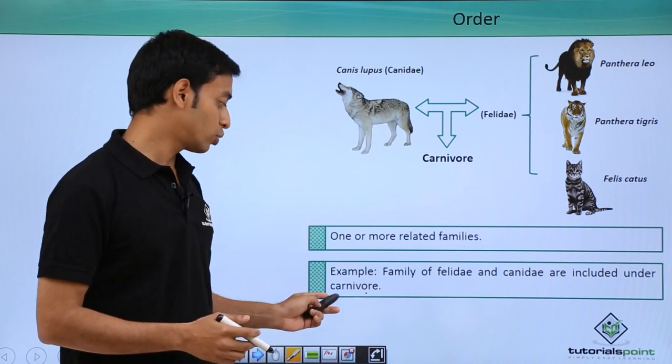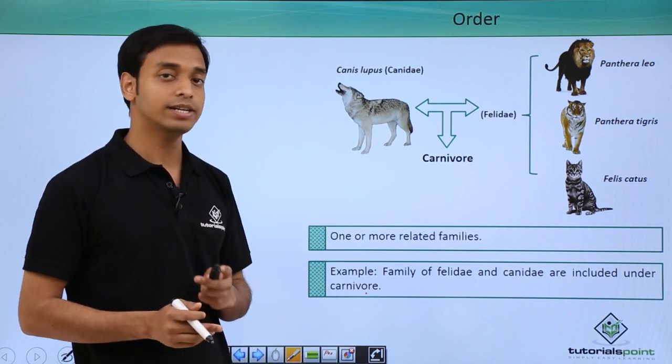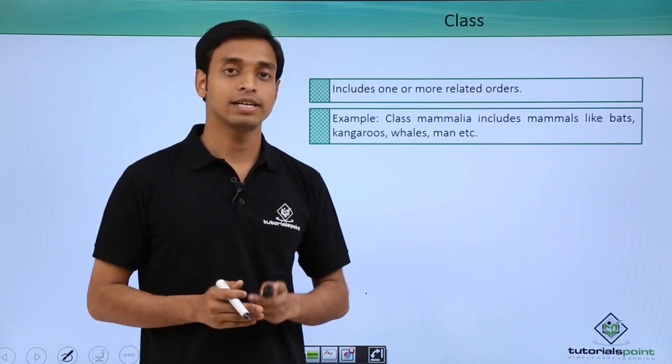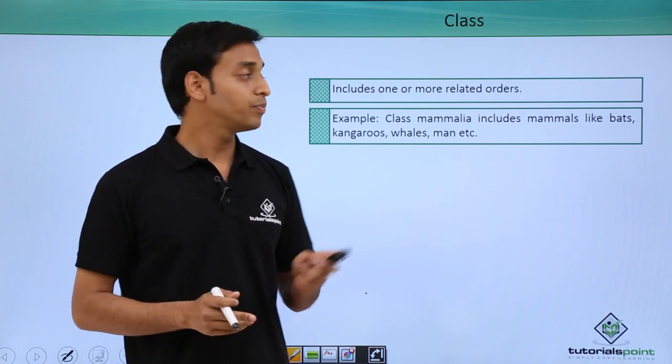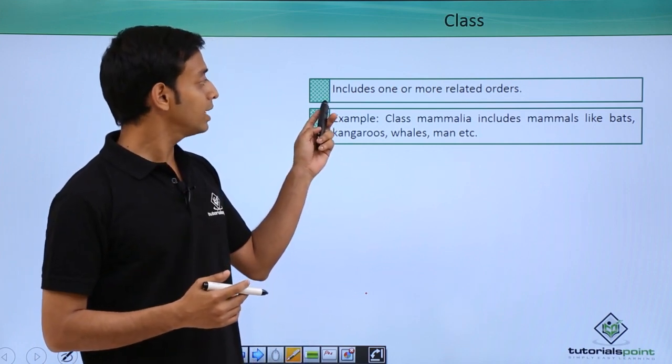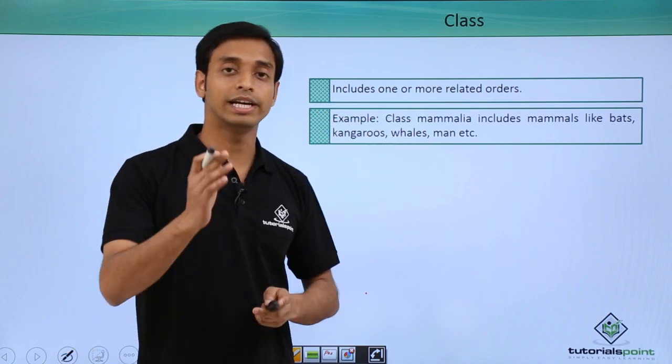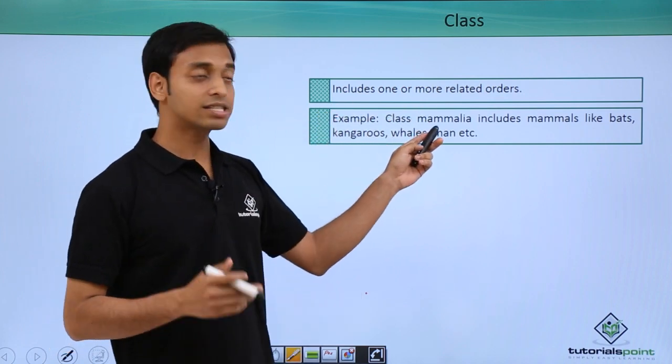The next is class. This is another higher category than the order. Class includes one or more related orders. A very good example is the class Mammalia.